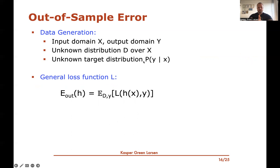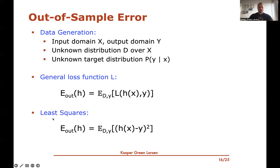The out-sample error is defined similarly: we still have the unknown distributions D and p(y|x). The out-sample error is the expectation over a new point x drawn from D and a label y drawn from the conditional distribution p(y|x), of the loss applied to the prediction and the true label. For least-squared loss, the out-sample error is the expectation of the squared difference between the prediction and the true label. This is what we'd like to minimize — the expected squared difference when drawing a new, unseen data point.